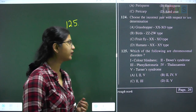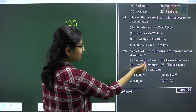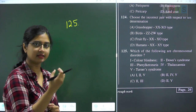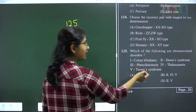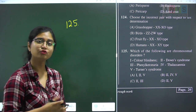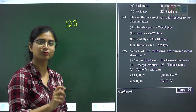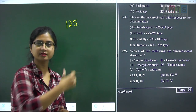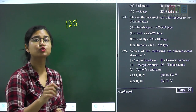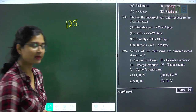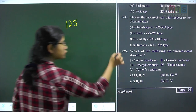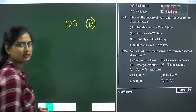Question 125: which of the following are chromosomal disorders? Color blindness, phenylketonuria, and thalassemia are Mendelian disorders — defects in specific genes. Down syndrome (trisomy 21, extra copy of chromosome 21) and Turner syndrome (XO condition in females, missing X chromosome) are chromosomal disorders — defects in chromosome numbers. So 2 and 5 are chromosomal disorders. Question 125 answer is option D.